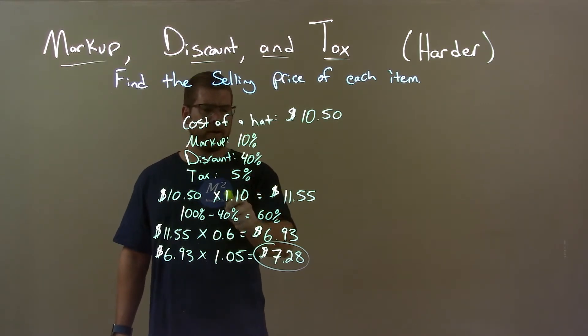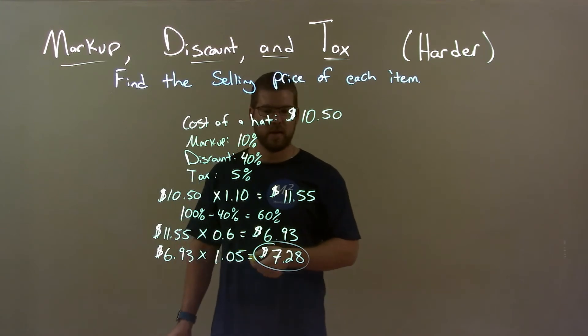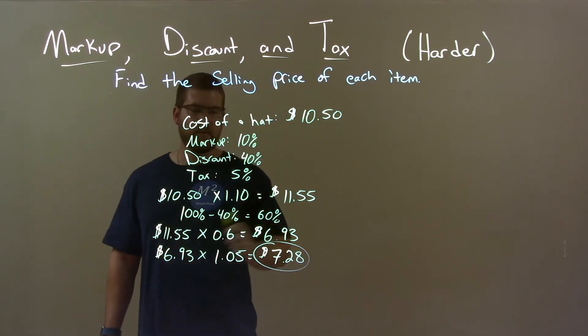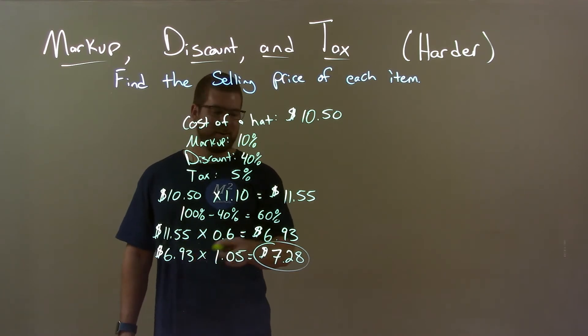Well, 10% markup gives us a cost of $11.55. 40% discount means we pay 60% of that price. As a decimal, 0.6, multiplied by that, got $6.93. Tax 5%, take that number, multiply by 1.05, and get a final answer of $7.28.